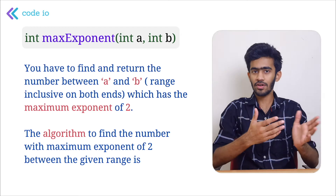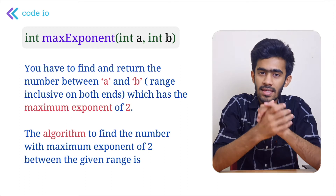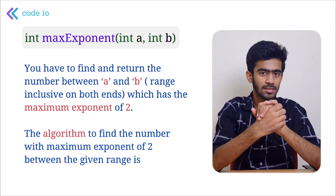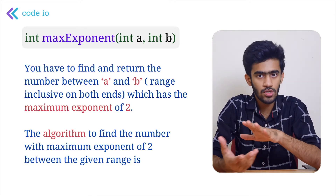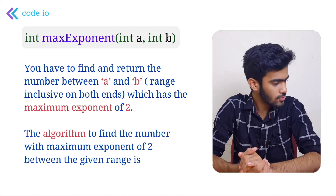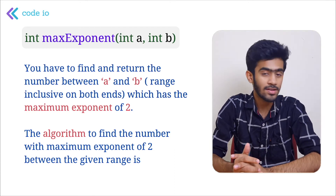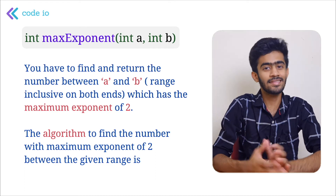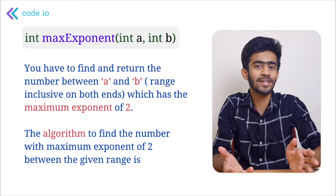We are given the function max exponent and we have to complete this function. Let us first read the passage, find the logic, and then code it. You have to find and return the number between a and b — range inclusive on both ends — which has the maximum exponent of 2. Ascension has given us the algorithm itself, so all we have to do is read it and implement it.